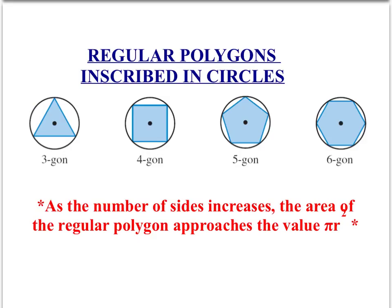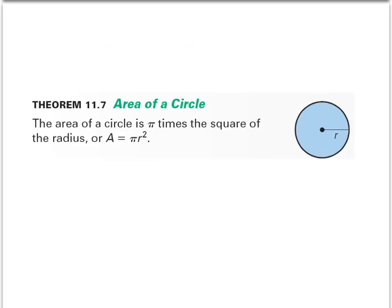To figure out where the area equation for a circle comes from, we want to look at the area of polygons inscribed in circles. As the number of sides continues to grow and the circle gets filled out more and more, the area of the regular polygon approaches the value of pi r squared. The equation to find the area of a circle is pi times the radius squared.